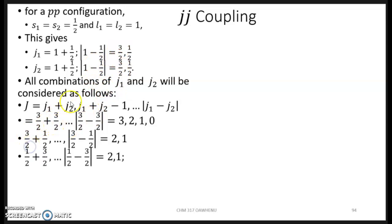For 3 halves and 1 half, that's for J1 and J2, we can add to get 2, 1. Similarly for 1 half and 3 halves, we have 2, 1. And then the last combination, half and half, where both small J1 and small J2 are halves, we have half plus half that's 1, half minus half that's 0. These are the combinations that we have.